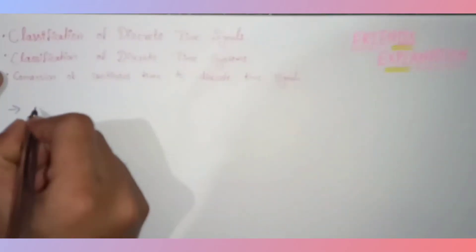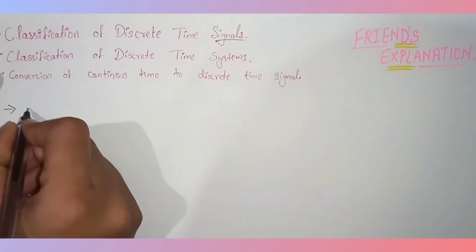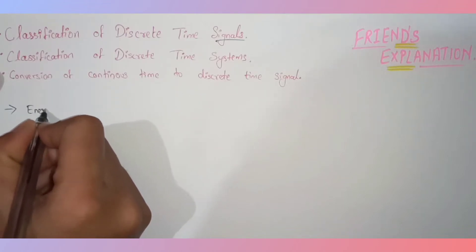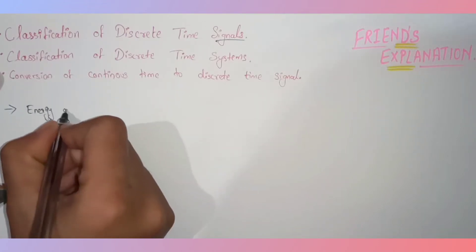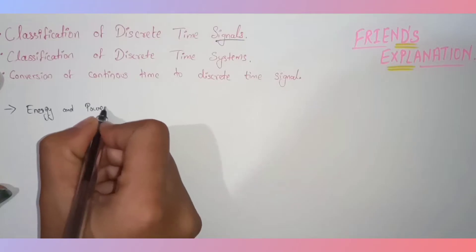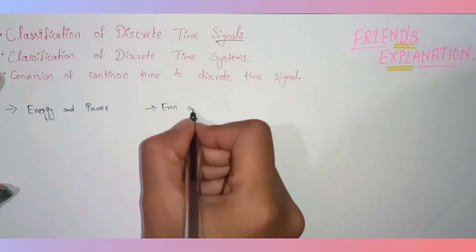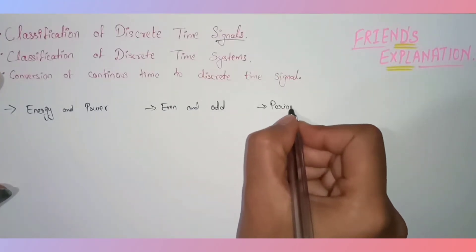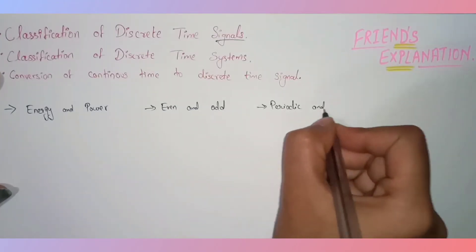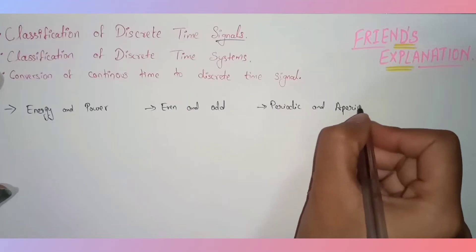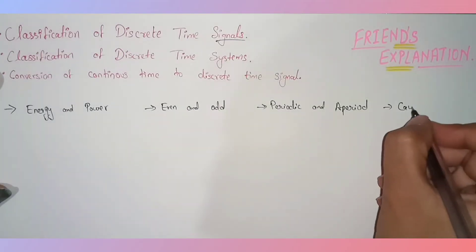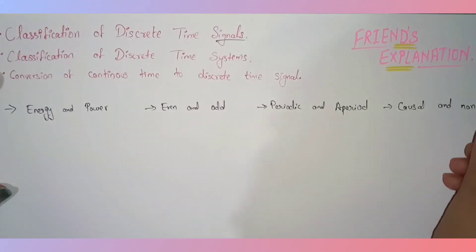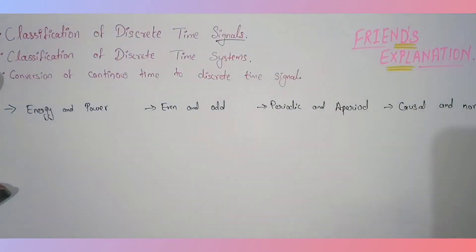First we will discuss what are the classifications of discrete time signals. The first classification is energy and power, the next one is even and odd signals, then periodic and aperiodic signals, and the last one is causal and non-causal signals.